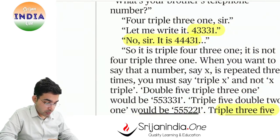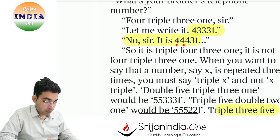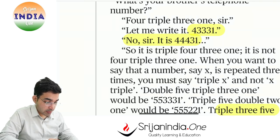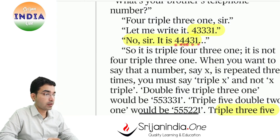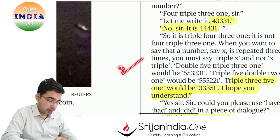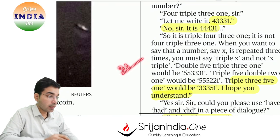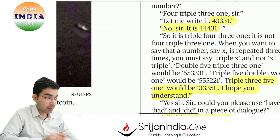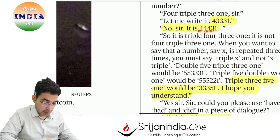Isko aap kaise bologe? Isko aise bola jaata hai — jaise '4431' hai toh 'triple four three one'. Pehle likha hai triple four — matlab teen baar four. Jaise phone number bhi hum batate hain toh hamesha pairs mein batate hain — jaise 'double line' ya 'something zero four eight'. Is tarike se aap apna phone number batate ho.